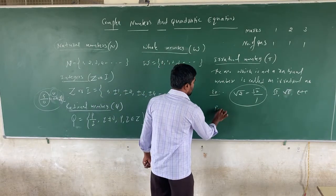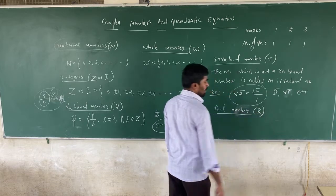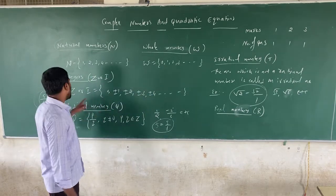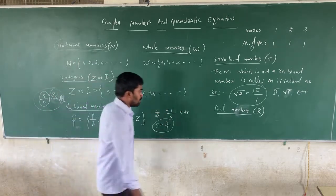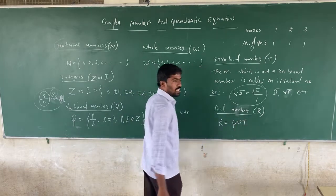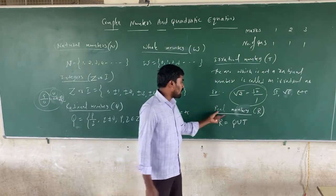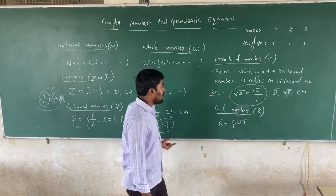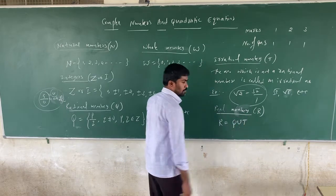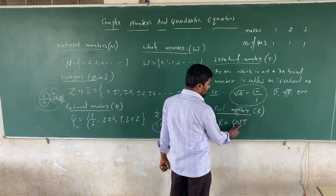Next, let me talk about Real Numbers. The representation of real numbers is R. Real numbers are the union of all rational and irrational numbers. Any number — whether it is a rational number or an irrational number — is called a real number.